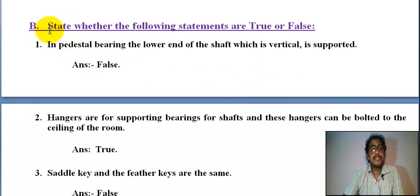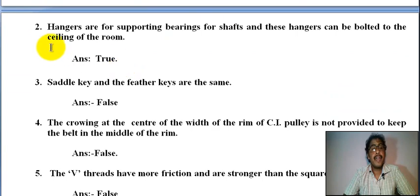Next, whether the following statements are true or false. In pedestal bearing, the lower end of the shaft which is vertical is supported. Pedestal bearing is supported, not vertical shaft is vertical, but pivot bearing is used for vertical support, so it is false.